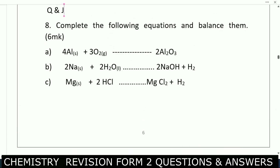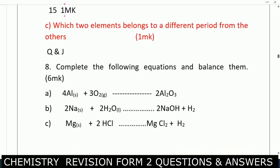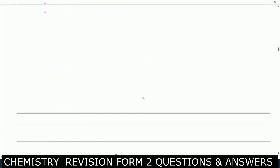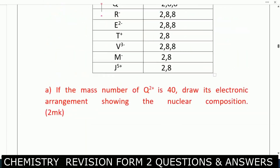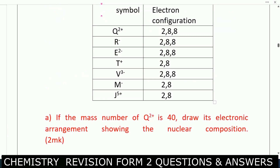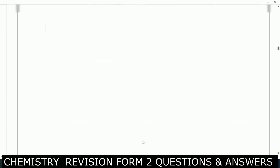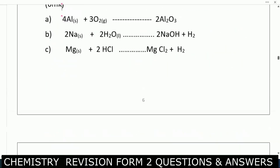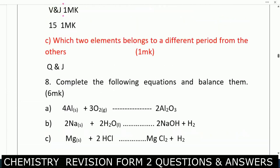Next, which two elements belong to different periods from the others? That is Q and J. Looking at Q and J, you can see how the electronic configuration is and how the ion is formed and appearing — that is why we say they belong to different periods from the others.